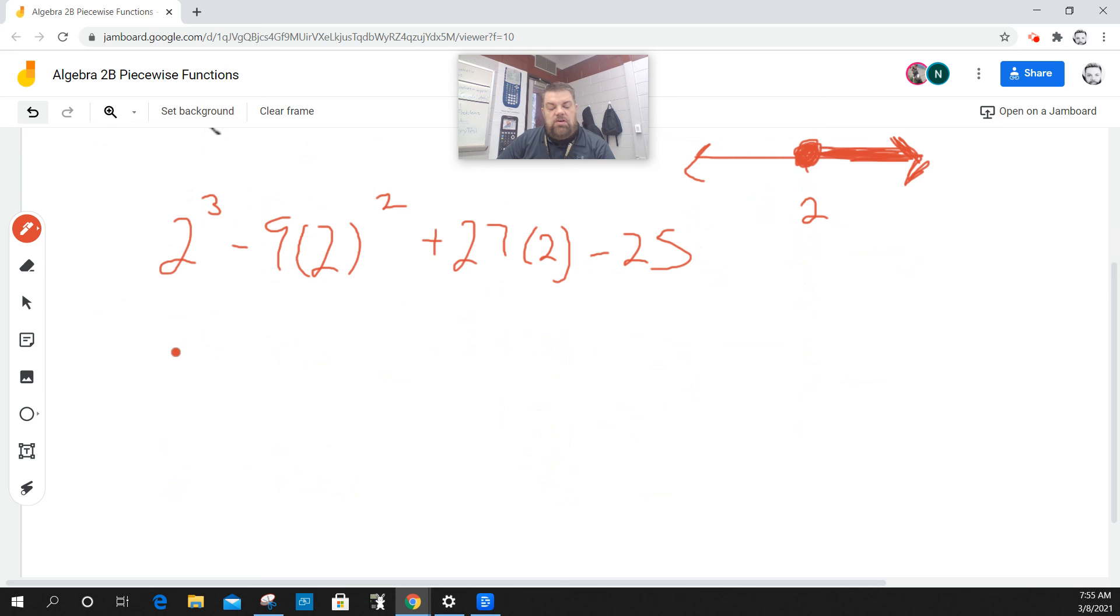So 8 is 2 cubed, because 2 times 2 is 4 times 2 again is 8 minus.